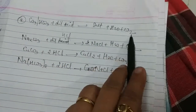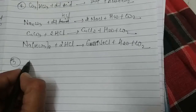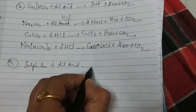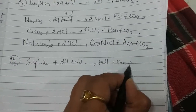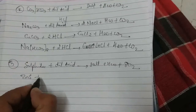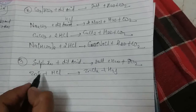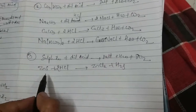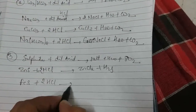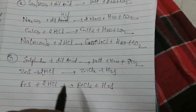The third reaction type involves sulfides. Sulfides plus dilute acid gives salt plus H₂S. For example, zinc sulfide plus HCl gives zinc chloride plus H₂S — HCl is multiplied by two for balancing. Another example: ferrous sulfide treated with dilute acid gives ferrous chloride plus H₂S. The activity series is important to recall for all these reactions.